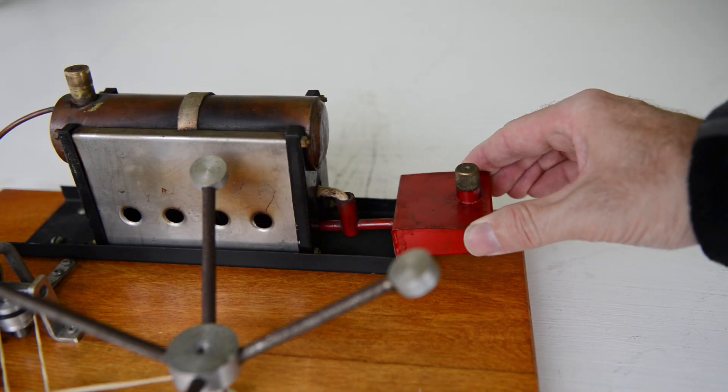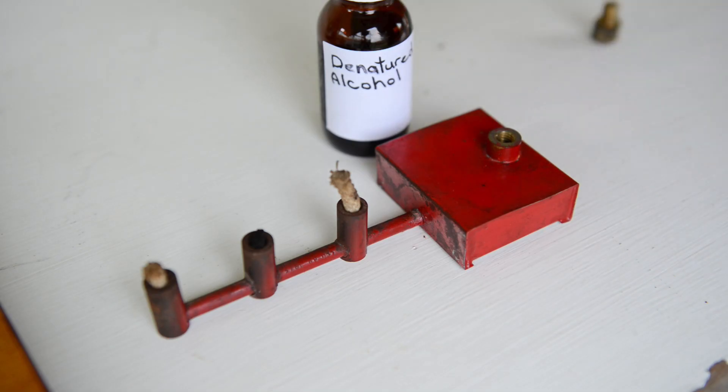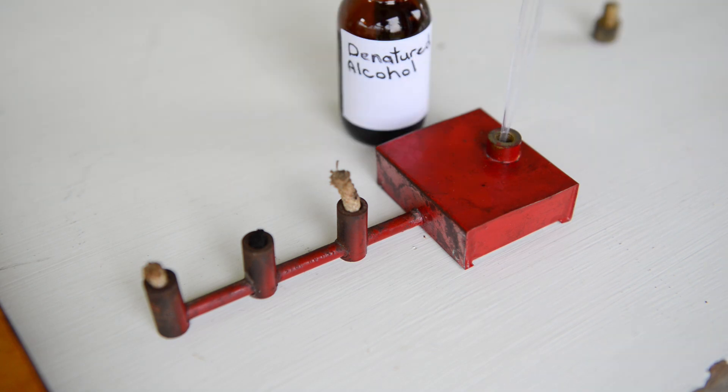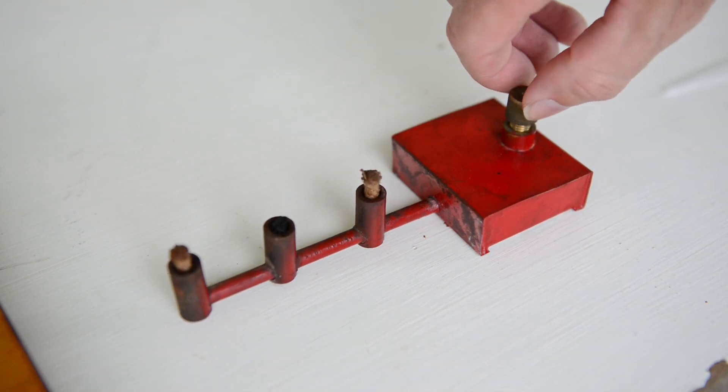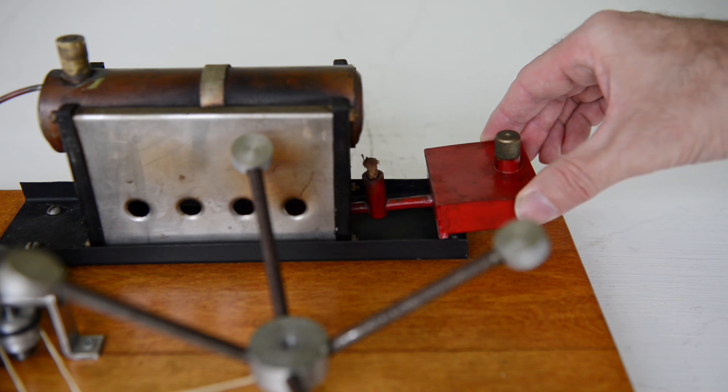Next I remove the burner from underneath the boiler and remove its cap. Then I proceed to fill the burner with denatured alcohol. This is what provides the fuel source for the burner. I put the cap back on and place it back under the boiler.